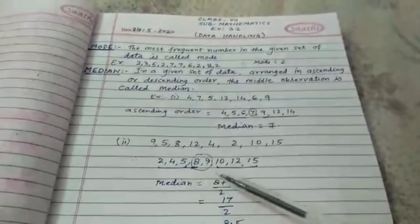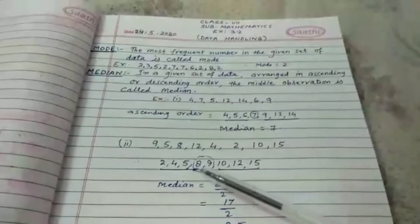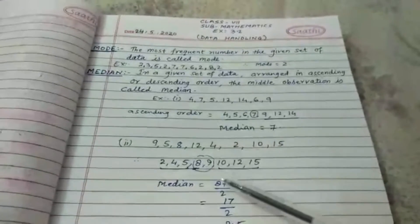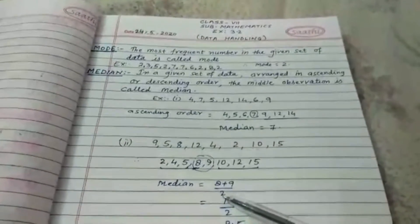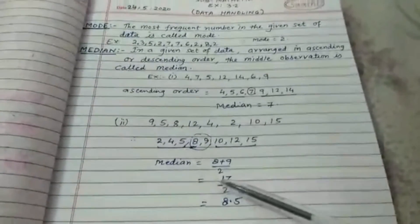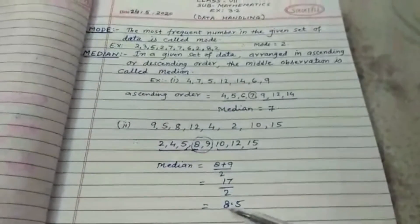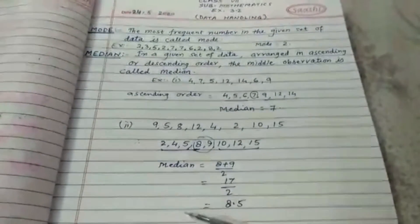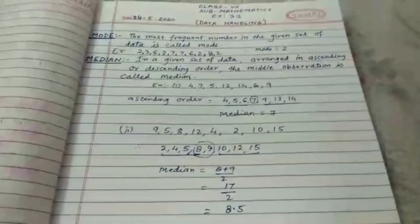The median is equal to the mean of the two middle terms. It means 8 plus 9 upon 2. It means 17 upon 2. It means 8.5. In this case, the median is 8.5.